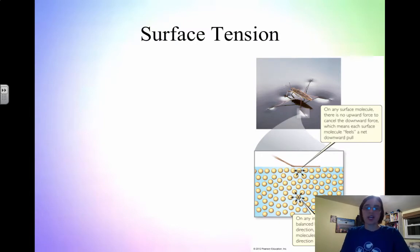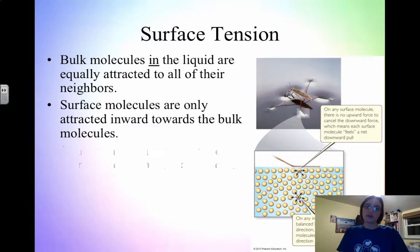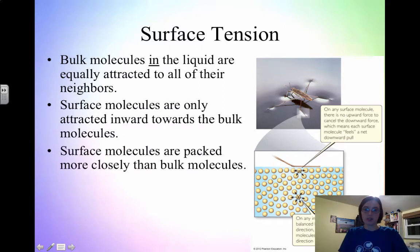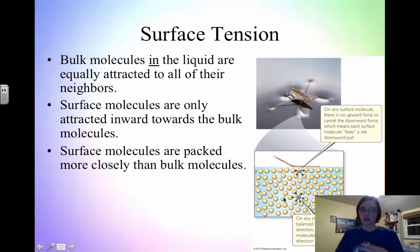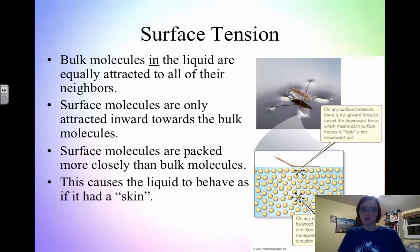The next property we're going to look at is surface tension. When we look at surface tension, it's important to know that the bulk molecules in the liquid are attracted to all of the molecules around them. The surface molecules, though, are only attracted inward — there's no upward force at all. When they're all attracted inward, this creates a skin on the top of the surface.